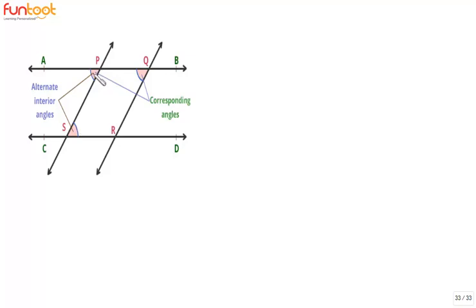Also, angle APS and angle PQR are corresponding angles, so these two angles are also equal. This angle is equal to this angle and this angle is also equal to this angle, that means these two angles are equal to each other also.